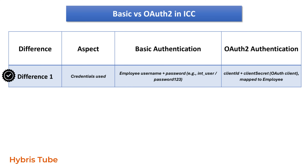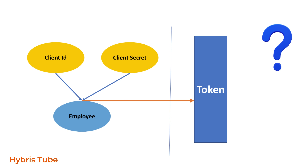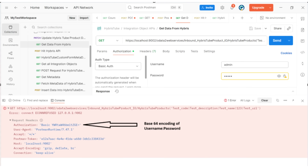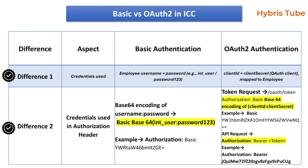But in OAuth2 authentication, we use the OAuth2 client for authentication, which is a combination of client ID and client secret. This OAuth2 client is mapped with a particular employee. How to generate the client ID and client secret, how to map it with an employee, what type of employee and user groups it has — we will discuss all these things in detail in this video. The second difference is the request header. In basic authentication, the request header looks like: authorization colon basic base64 of username and password.